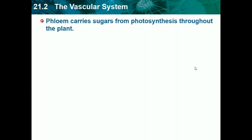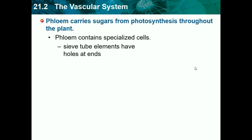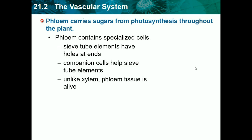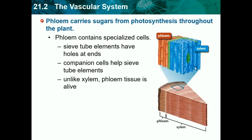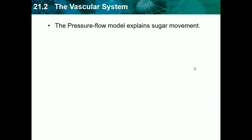The phloem carries sugar from photosynthesis through the plant. Phloem contains specialized cells — sieve tube elements have holes at the end, and companion cells help the sieve tube elements — but we don't need to know the specialized cells. Unlike xylem, phloem tissue is alive, and it moves sugar. That's essentially all we need to know.